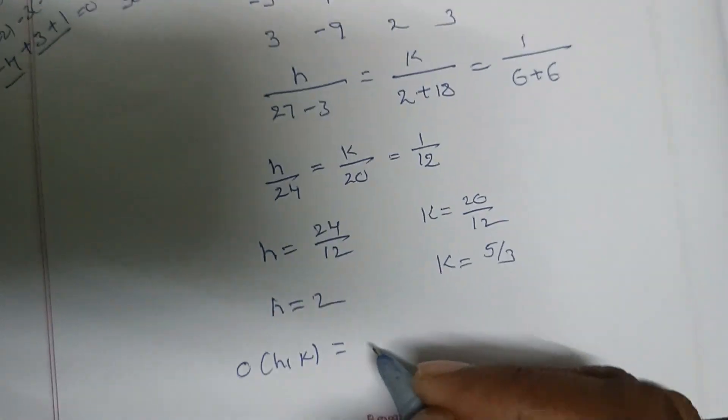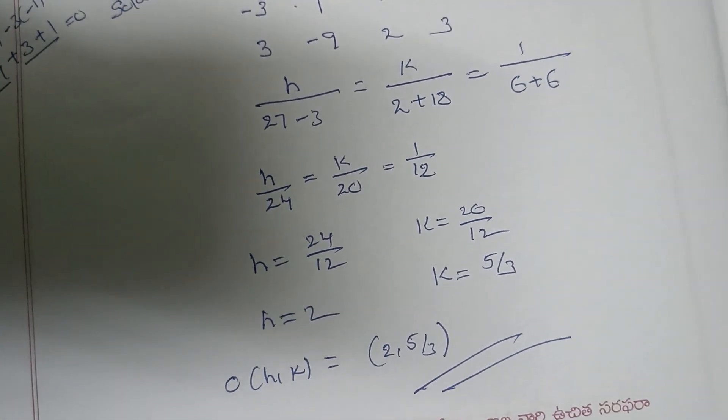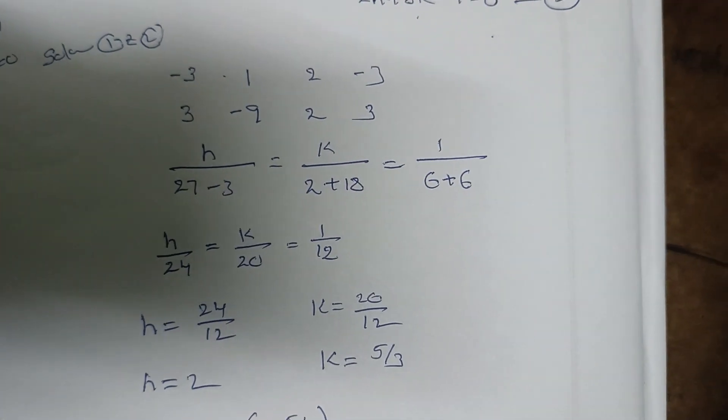Therefore, the required orthocenter O(h,k) is equal to (2, 5/3). This is a very important essay question for first year intermediate.